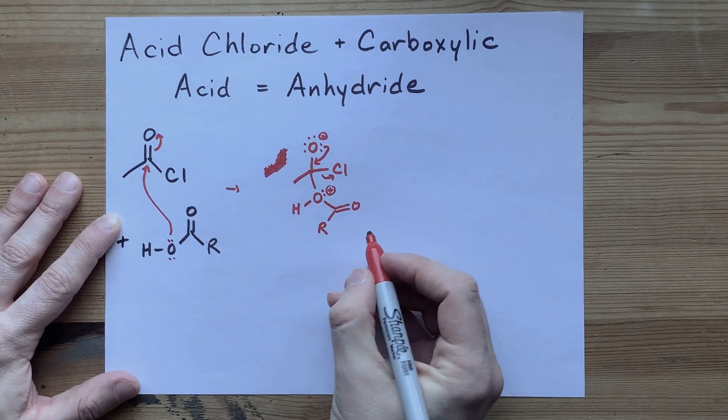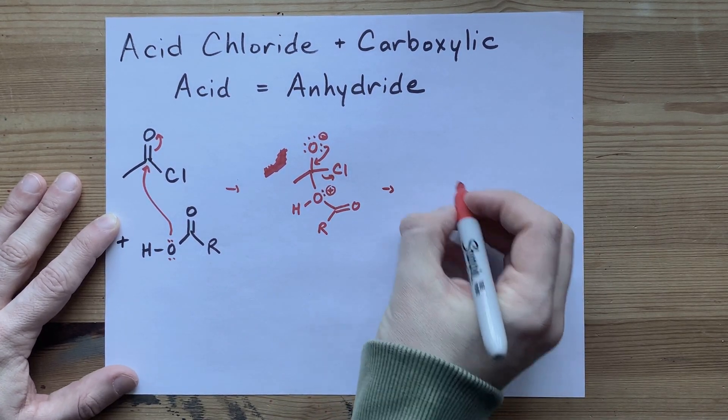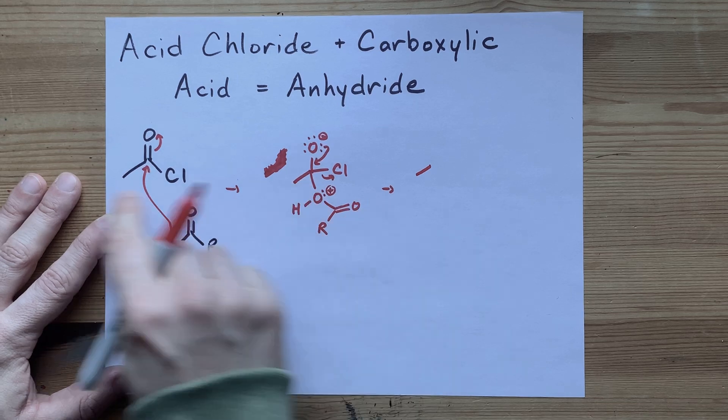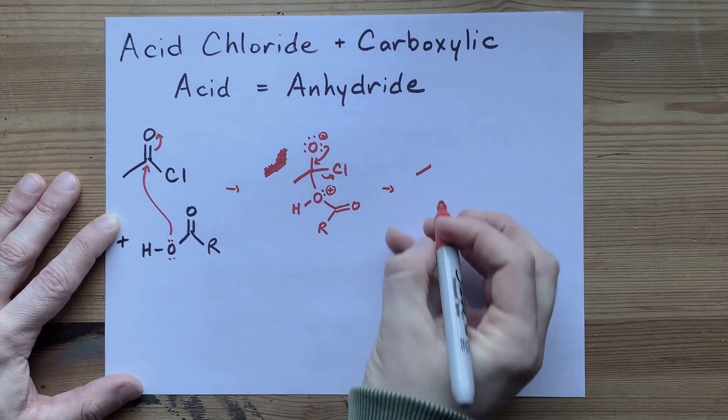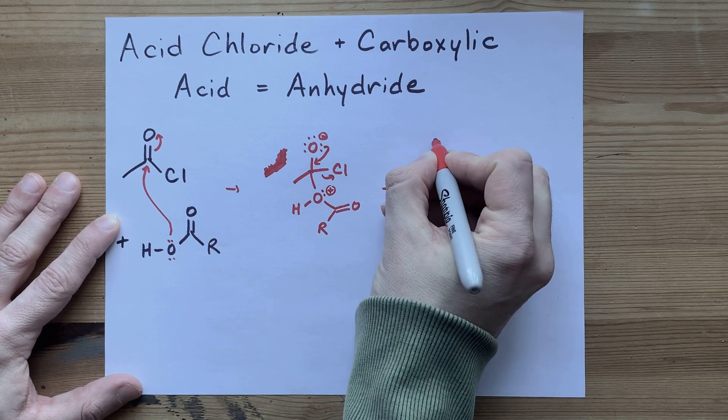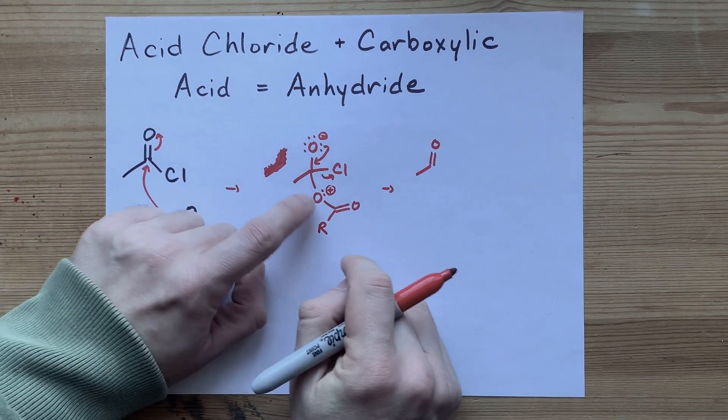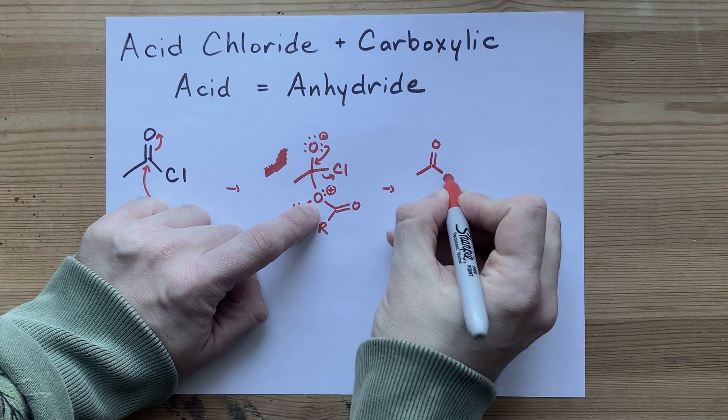That leaves you with that same carbon chain from the acid chloride. You've reformed your double bond to that oxygen. And now you have a single bond to this oxygen.